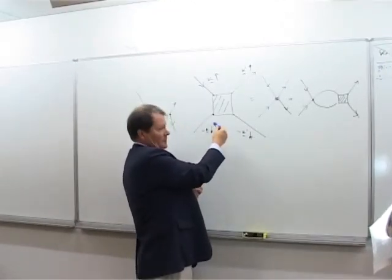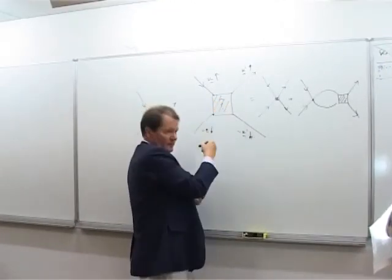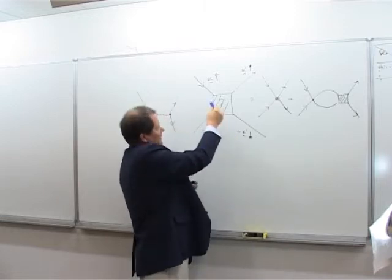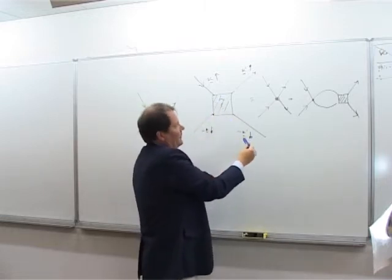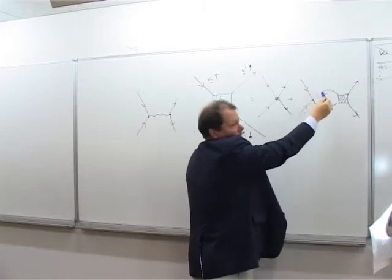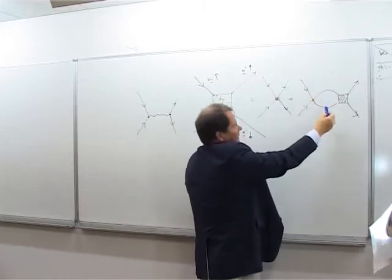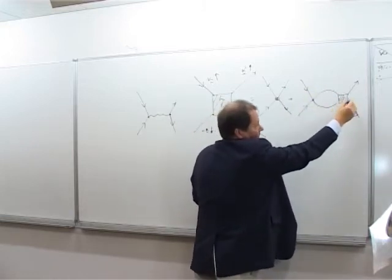Actually, in the highest order of the perturbation theory, the process is much more complicated, and two electrons coming together might exchange by phonons many times, and finally, they finish in the bound state, which is known as the Cooper pair.